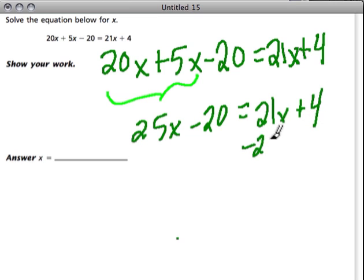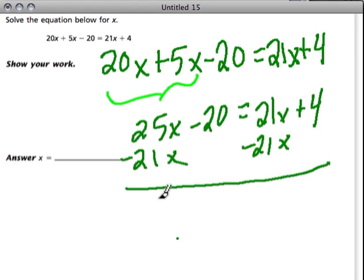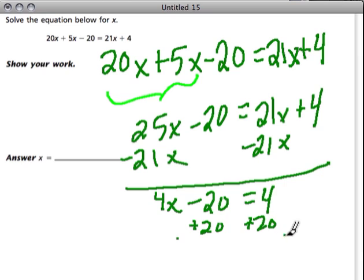Now I'm going to subtract 21x from both sides. That will give me 4x minus 20 is 4. Then I want to add 20 to both sides. This gives me 4x equals 24.